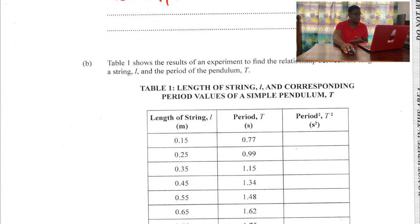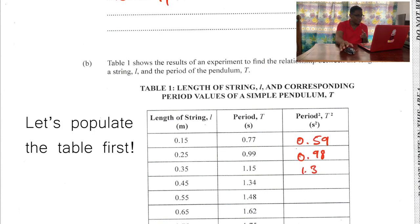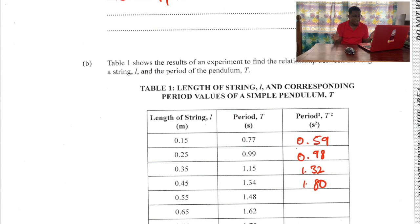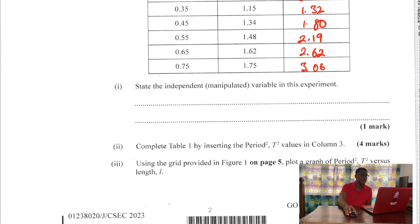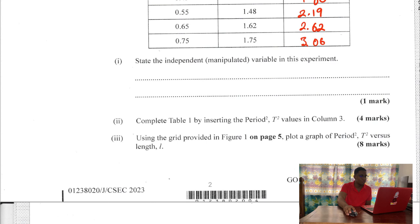Now 1B — the table shows results of an experiment to find the relationship between the length of a string L and the period of a pendulum T. There are a few blank spaces in the table under 'period squared,' so we need to square our period values and add them to that column. I'm going to go ahead and do that for you quickly. B1: state the independent manipulated variable in this experiment — that would be length.